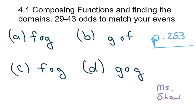I'm going to try to do as many odds, 29 through 43, to match your evens that you will do in class for daily work. Until this video, I can only go 30 minutes, so I'm going to go a little fast. We already went over the domains of the composite functions, and we're going to compose these functions. Each problem, you have to do four parts: a, b, c, and d. You can also see the domain better, especially with the rational functions.